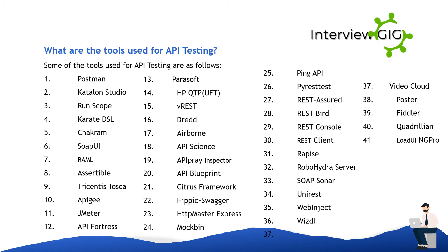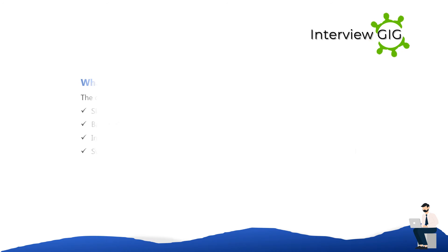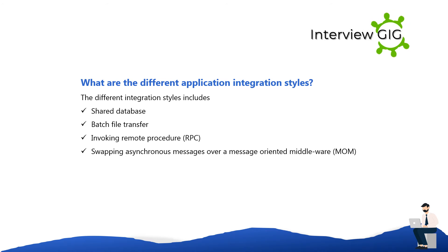What are some common API errors? Common API errors include: missing module errors, documentation errors, parameter validation errors, stress and performance issues, security issues, duplicate or missing functionality, reliability issues, improper messaging, incompatible error handling mechanisms, multi-threaded issues, and other standard error expectations where results are not as predicted.